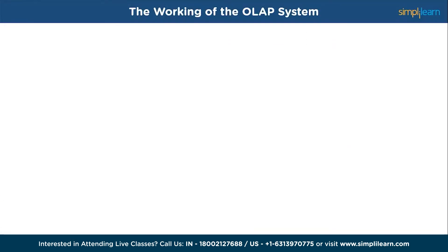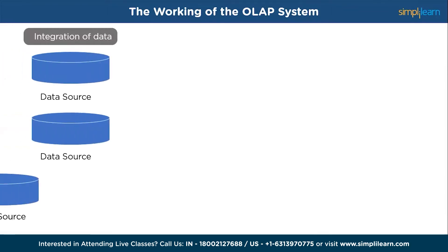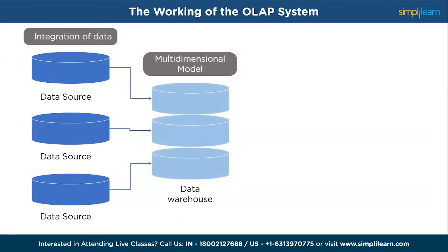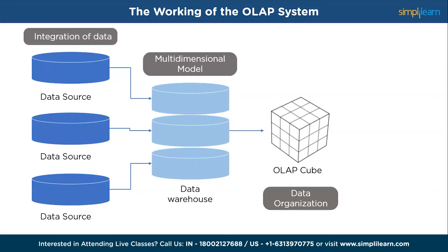Since we already have an understanding of what OLAP is from the introduction, let's now explore further by exploring the working of an OLAP system. The online analytical processing workflow involves integrating data from various sources, followed by structuring it into a multi-dimensional model. The data is organized to contain dimensions, measures, and pre-calculated aggregations.